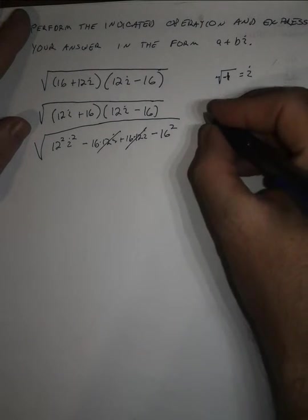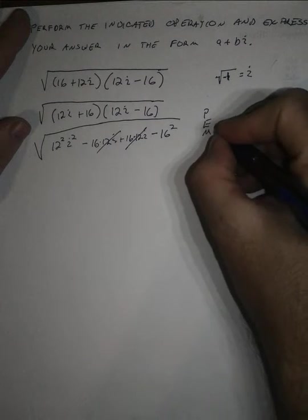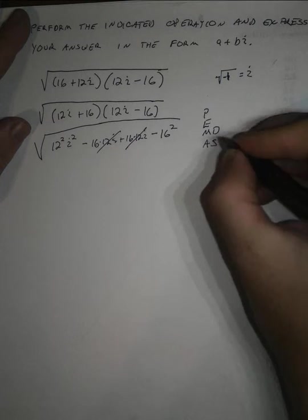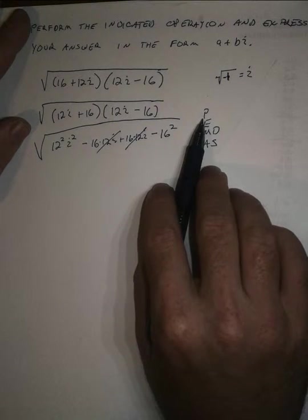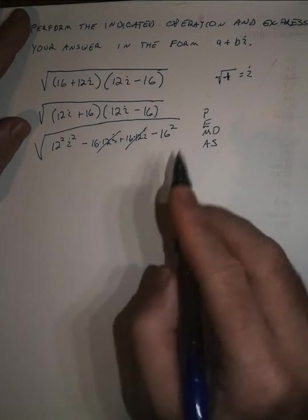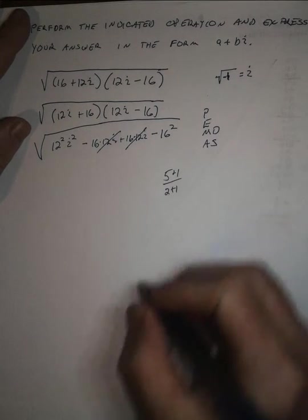If you think of order of operations, PEMDAS, as some of you all would see, parentheses is a shorthand for any grouping symbol, like the fraction bar. Five plus one over two plus one.